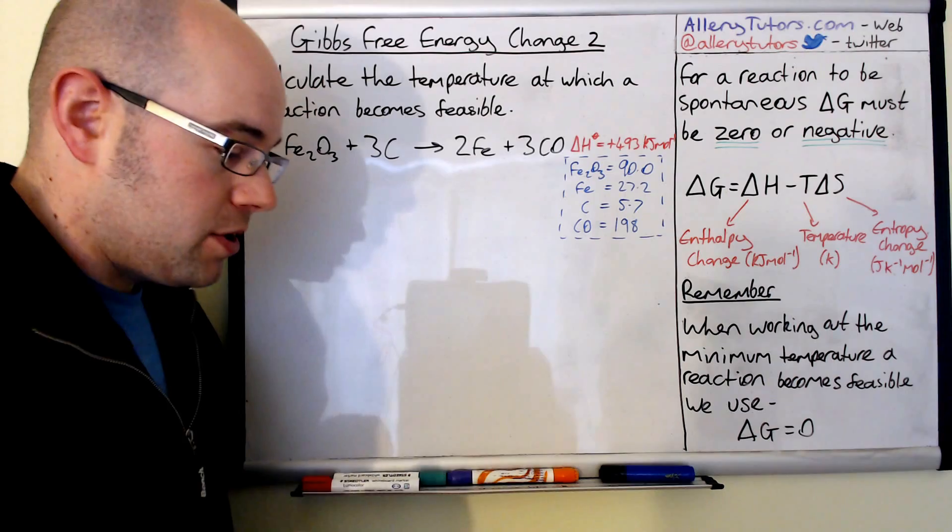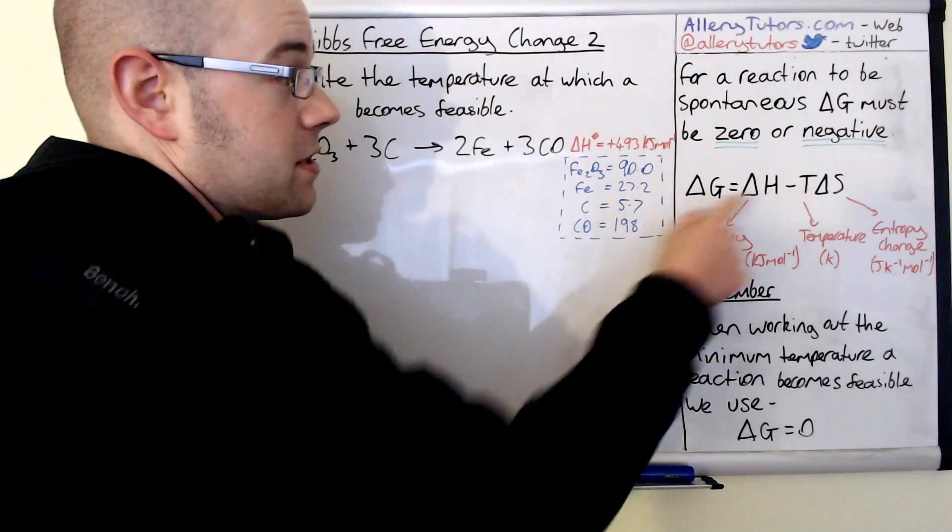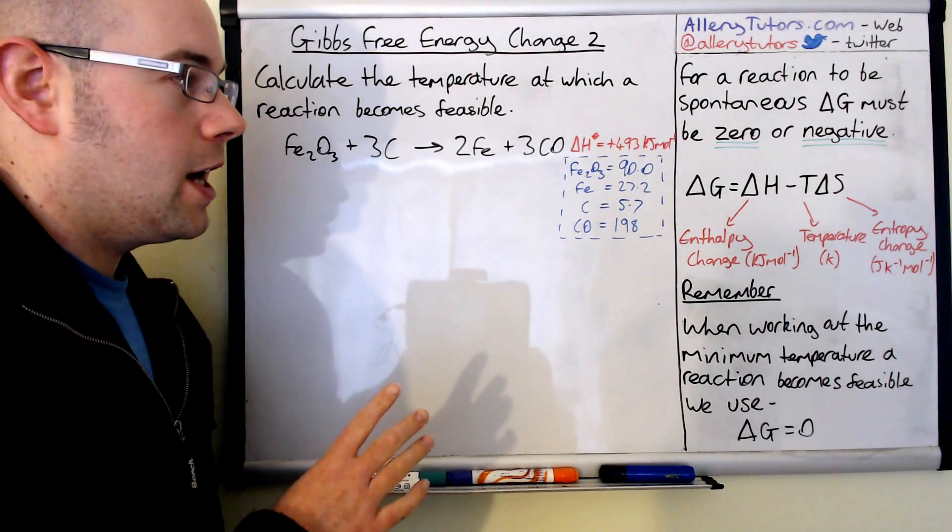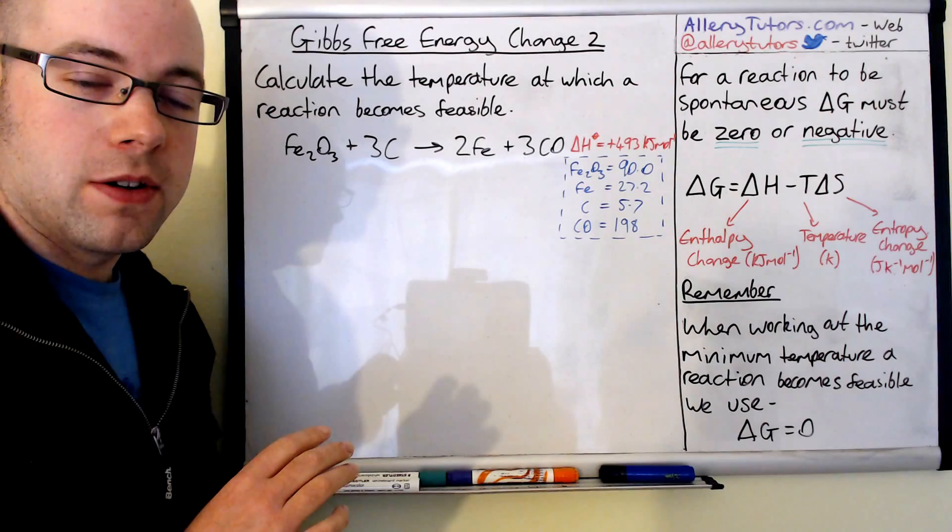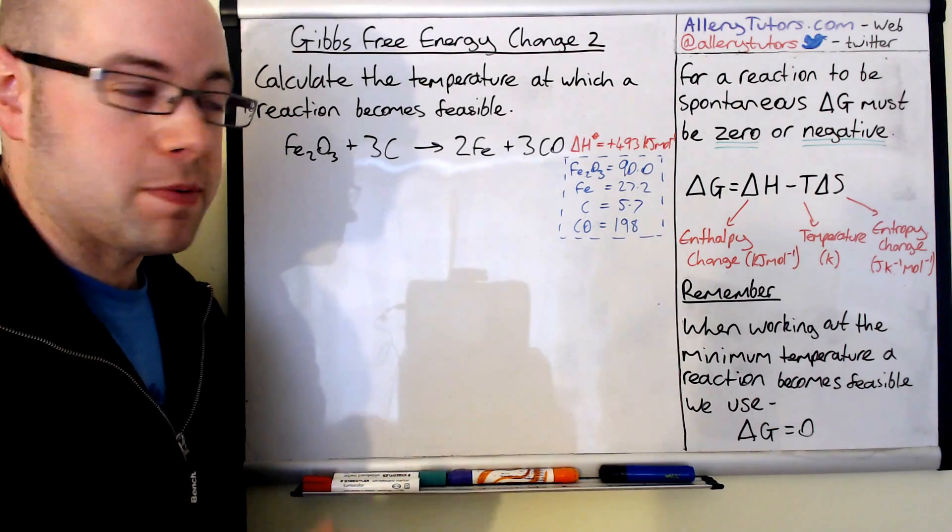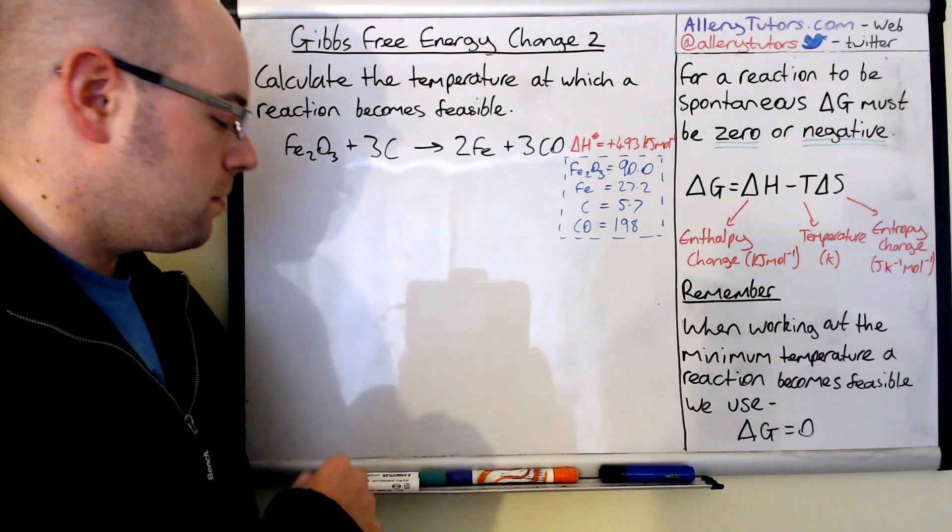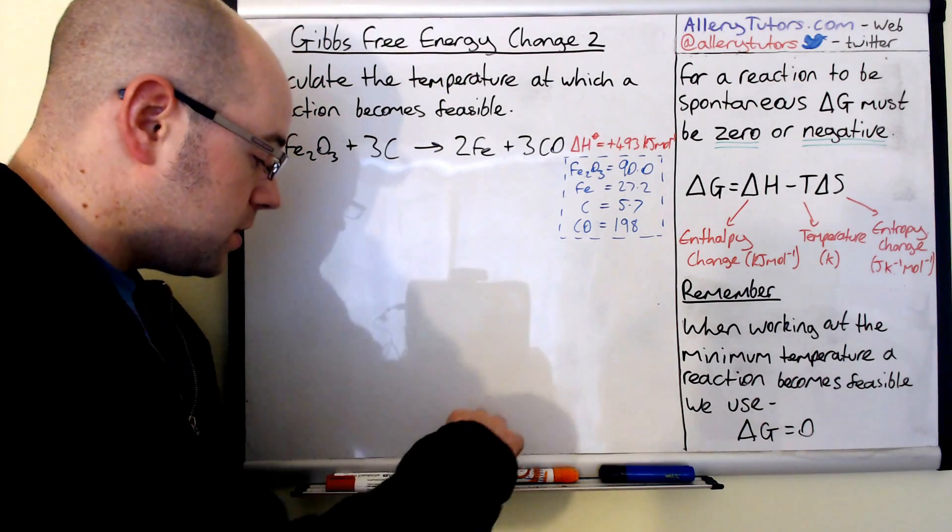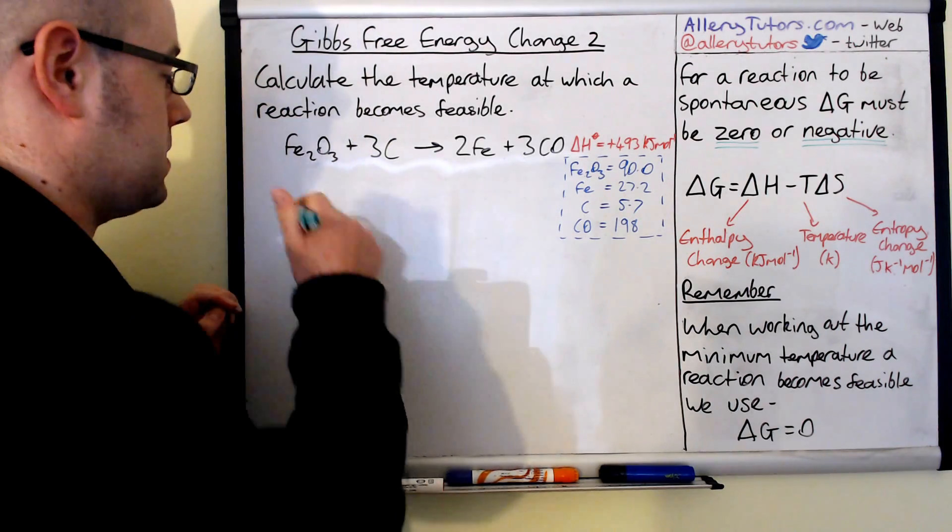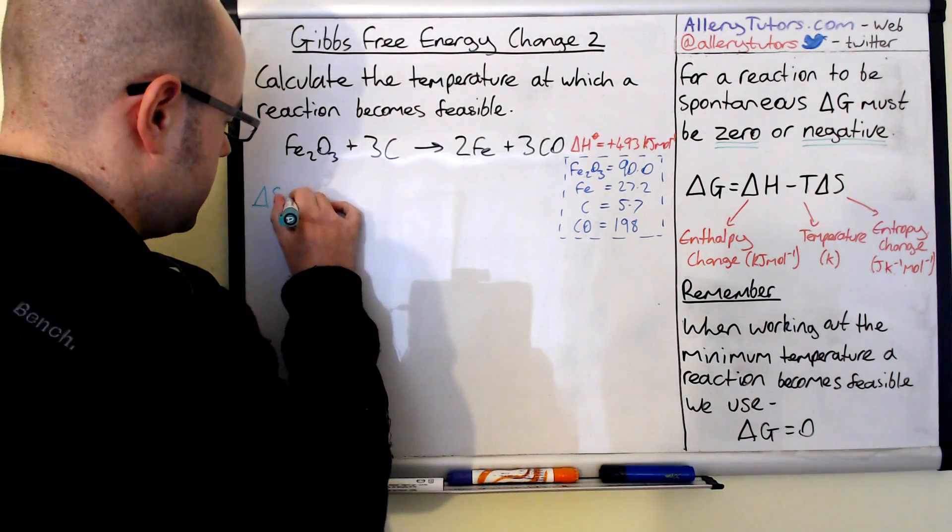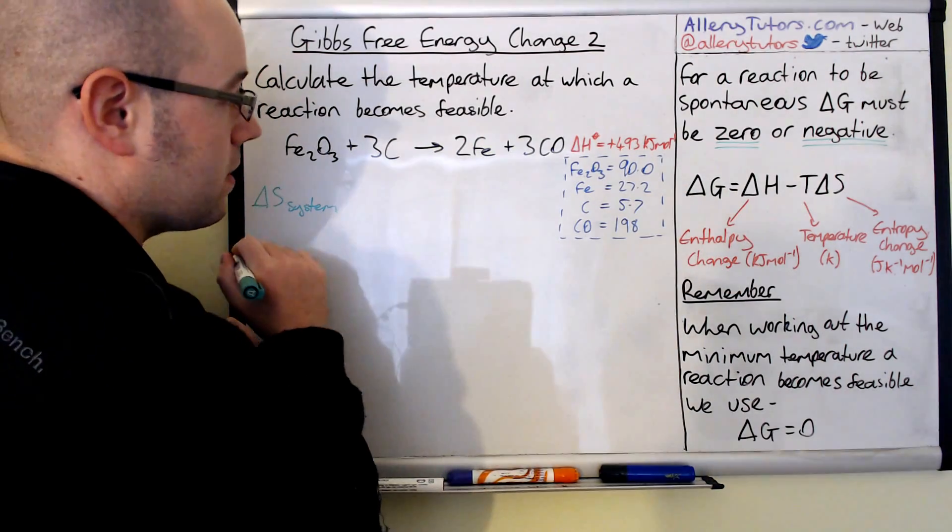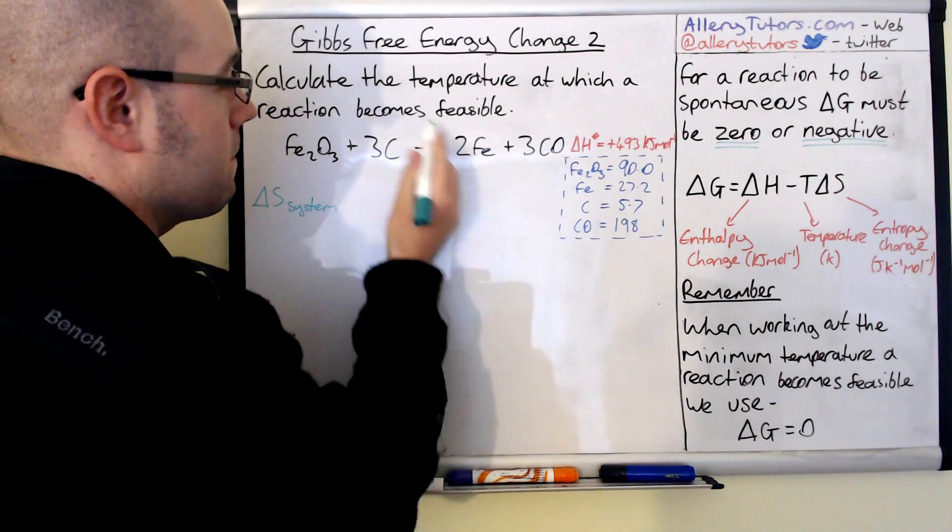What we're going to do first is work out the entropy of the system. The delta S bit is the entropy of the system only, not total entropy. If you don't know how to calculate entropy of the system, then I have done a video that looks into calculating entropy of the system, so just click the link below. But I'm going to assume that you know how to work this out.